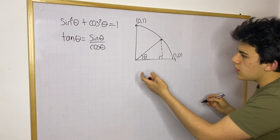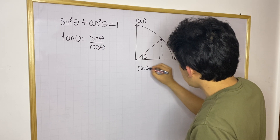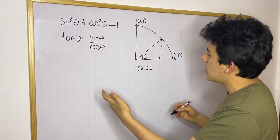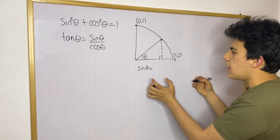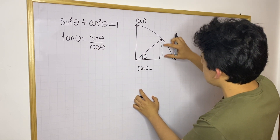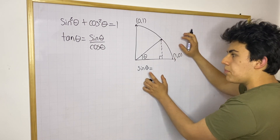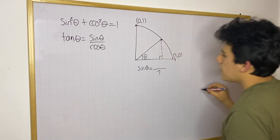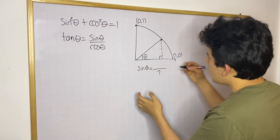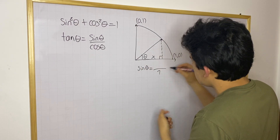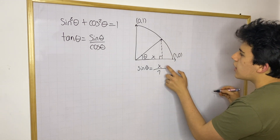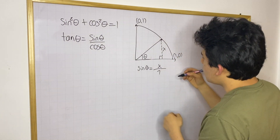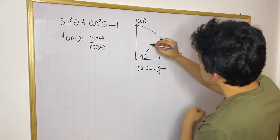We can define this angle as theta. To find the sine of that angle: sine theta equals the opposite side divided by the hypotenuse. The opposite side is the height of the triangle — let's call it x — and we know the hypotenuse is 1 since it's the unit circle. So sine theta equals x over 1, which means sine theta is simply equal to x.